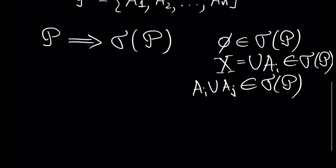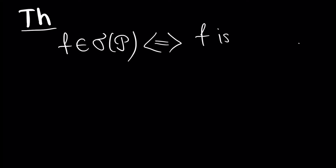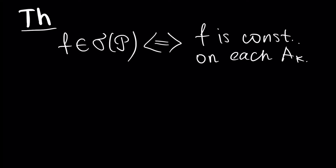We have a theorem. A function f is measurable in the sigma algebra generated by this partition if and only if f is constant on each element of this partition. The partition consists of a1, a2, and so on, an. So f is measurable if and only if it is constant on each element ak, where the partition {ak} generates sigma algebra σ, and f is measurable in this sigma algebra.